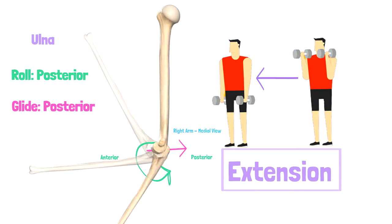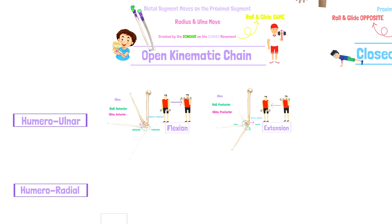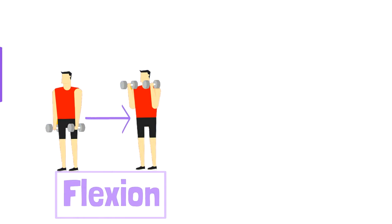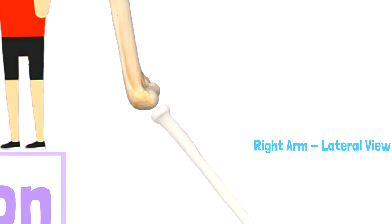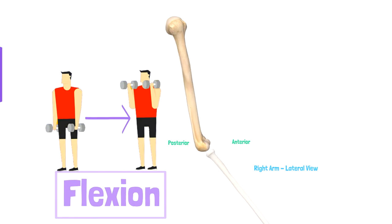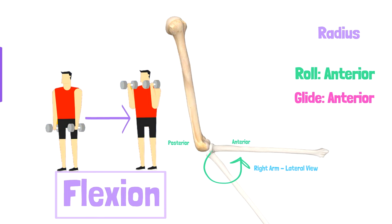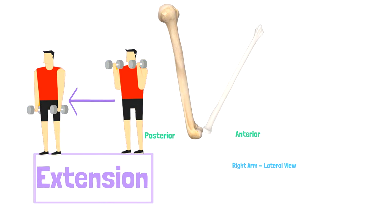Now let's examine humeral radial arthrokinematics and start with flexion again. Since we observe a concave radial head moving around a convex capitulum, the roll and the glide will occur in the same direction. With flexion, observe the radius roll and glide in the anterior direction. With extension, observe the radius roll and glide in the posterior direction.